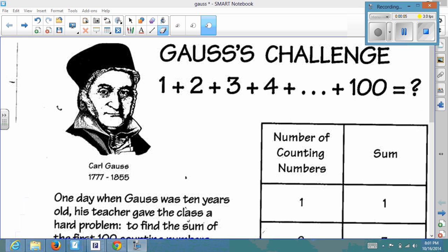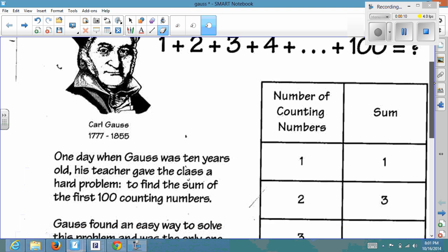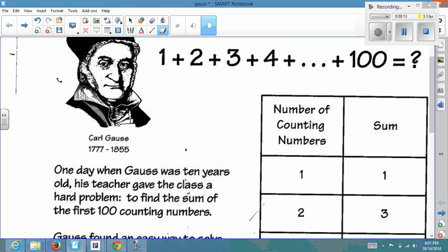When Gauss was just 10 years old, he was in math class, and his teacher posed a problem. The problem was to find the sum of the first 100 counting numbers.